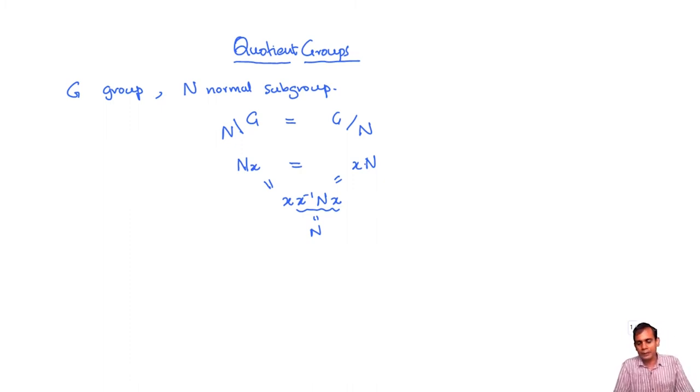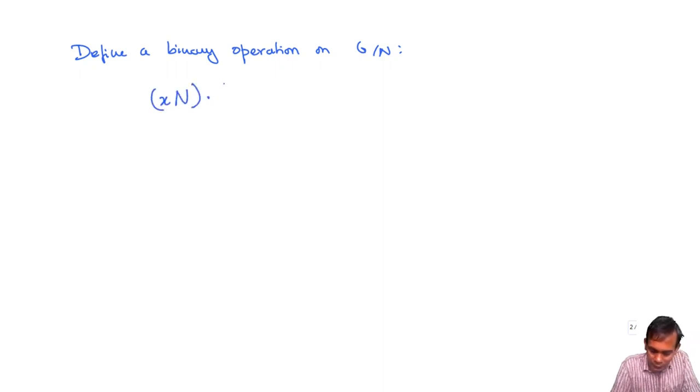Now, we can define in such cases a binary operation on G mod N. It doesn't matter whether I am talking about left or right cosets. I will just write left cosets here: XN times YN is equal to XYN. It's not enough to just write this down. I need to make sure that this is well defined.